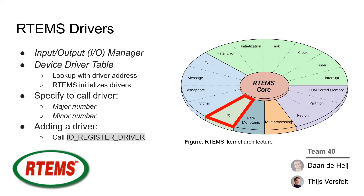Adding a new driver goes as follows: an application calls IORegisterDriver of the IO Manager and optionally specifies a major number. The driver will be added to the device driver table at the specified index. If no major number is supplied, it will take the next available index and return the major number. A name can also be associated to the driver using IORegisterName, and a driver can also be initialized using IORegisterDriver.